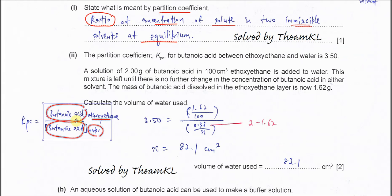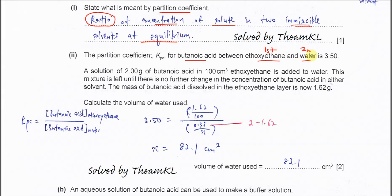Part two: given the KPC for butanoic acid between ethoxyethylene and water. Whenever it mentions 'between' the first solvent and the second solvent, normally the first solvent is the numerator and the second solvent is the denominator. Remember this. The KPC is given as 3.5, which shows that the concentration of butanoic acid is higher in ethoxyethylene than in water.